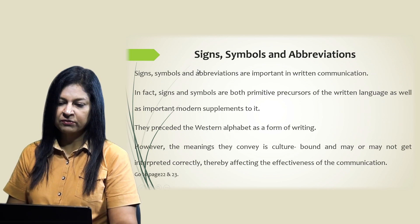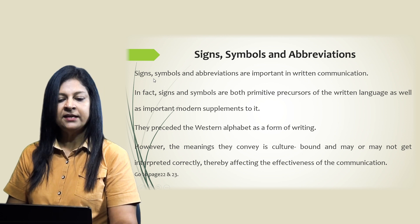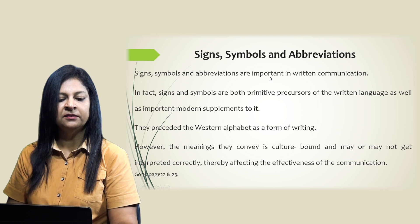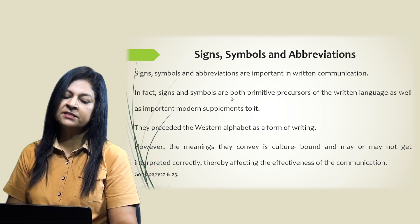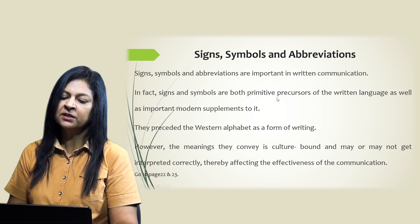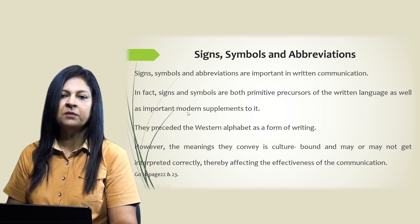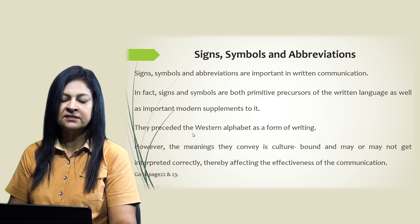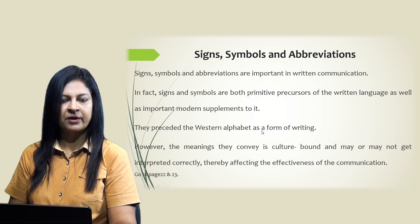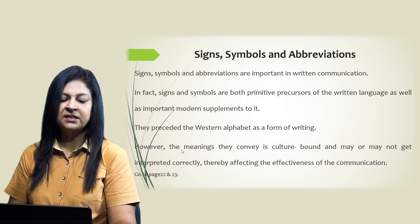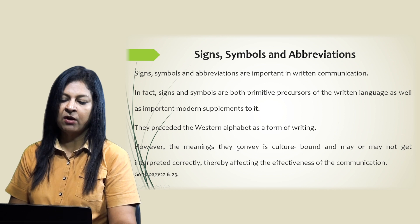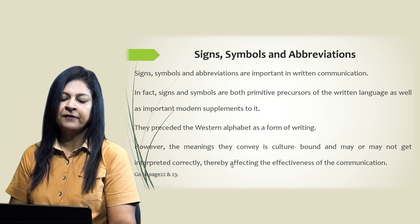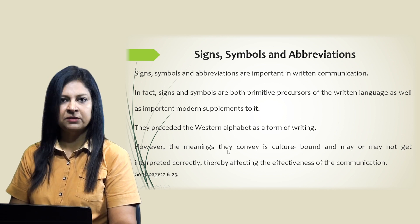Signs, symbols and abbreviations are important in written communication. In fact, signs and symbols are both primitive precursors of written language as well as important modern supplements to it. They preceded the western alphabet as a form of writing. However, the meaning they convey is culture-bound and may or may not be interpreted correctly, thereby affecting the effectiveness of communication.